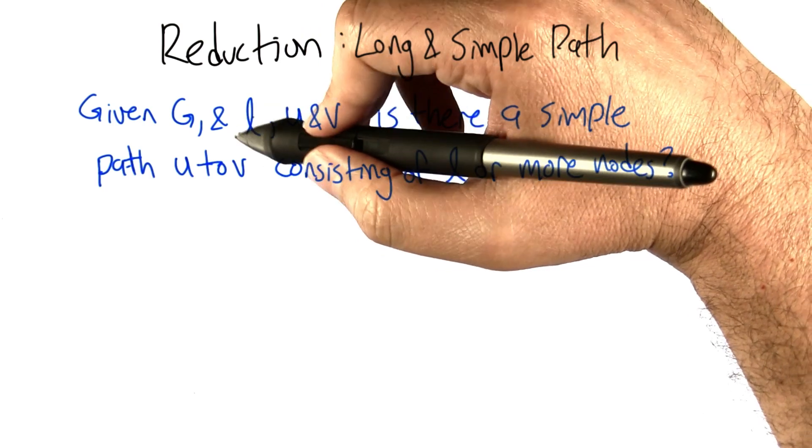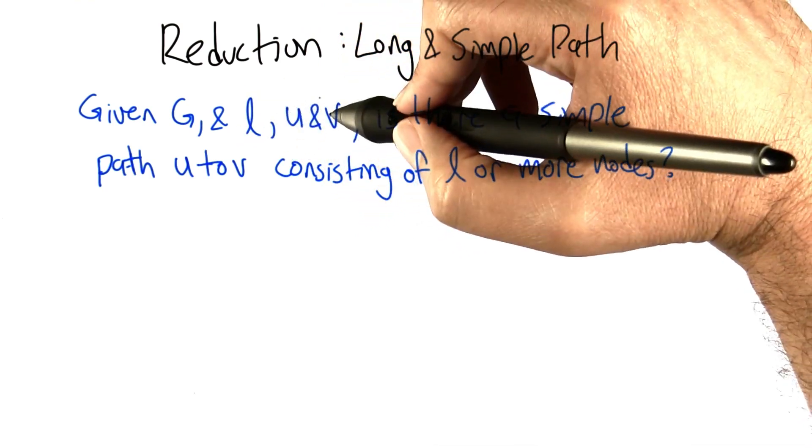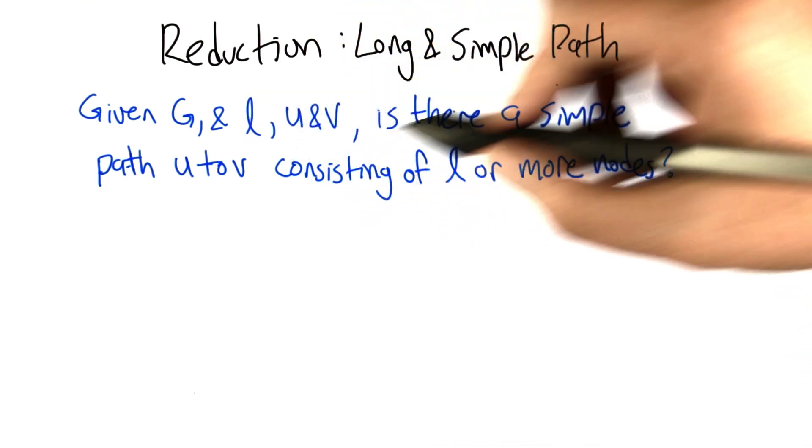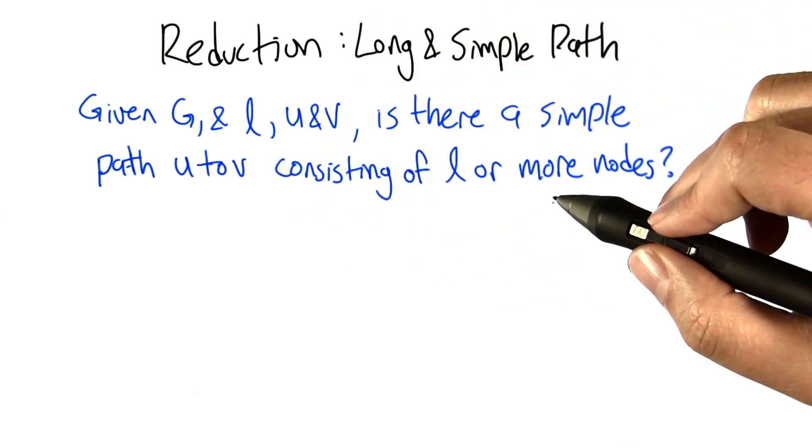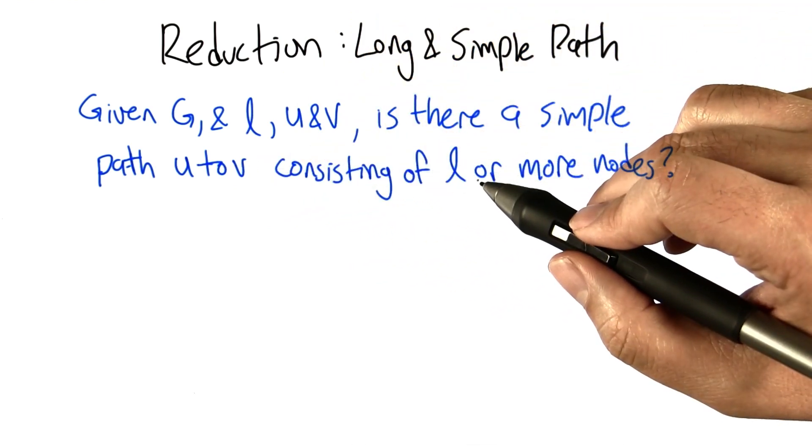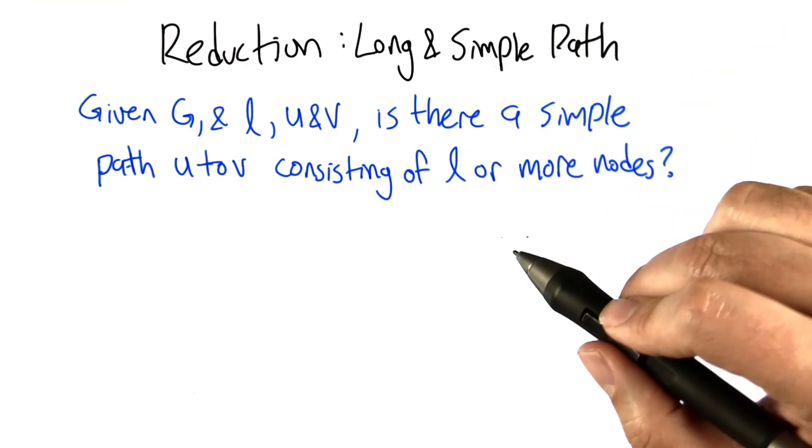Given a graph G and a length L and two nodes U and V, is there a simple path from U to V consisting of L or more nodes? So we're not looking for a short path, we're actually looking for a long and simple path.